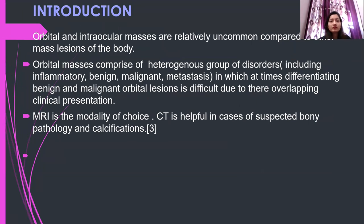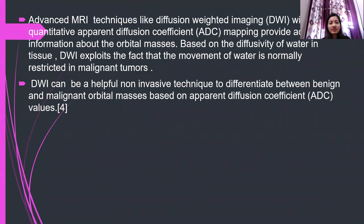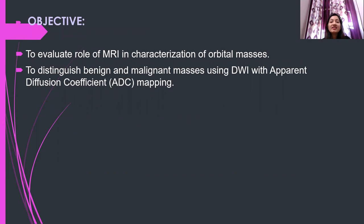Introduction. Orbital and intraocular masses are relatively uncommon compared to other mass lesions of the body. Orbital masses comprise a heterogeneous group of disorders including inflammatory, benign, malignant, and metastatic lesions, in which differentiating benign and malignant orbital lesions is difficult due to overlapping clinical presentation. MRI is the modality of choice. CT is helpful in cases of suspected bony pathologies and calcification. Advanced MRI techniques like diffusion-weighted imaging with quantitative apparent diffusion coefficient mapping provide additional information. DWI exploits the fact that movement of water is normally restricted in malignant tumors, and can be a helpful non-invasive technique to differentiate between benign and malignant orbital masses based on ADC values. Objective: to evaluate the role of MRI in characterization of orbital lesions and to distinguish benign and malignant masses using DWI with ADC mapping.